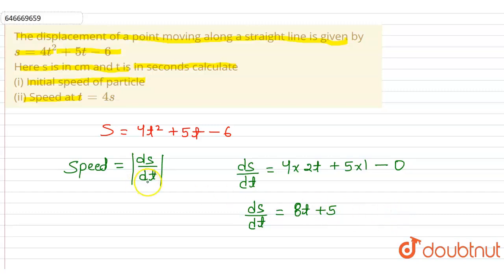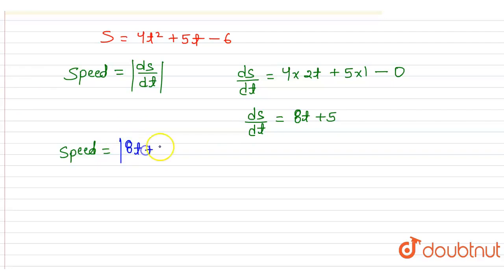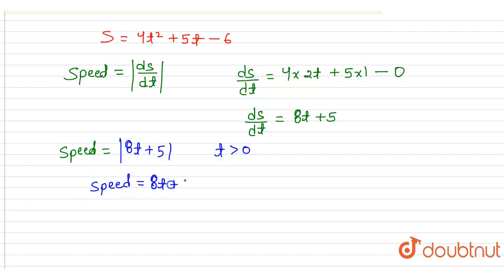Now speed is equal to the modulus of ds/dt, which gives us 8t + 5. Since time is always positive, we can write speed = 8t + 5.